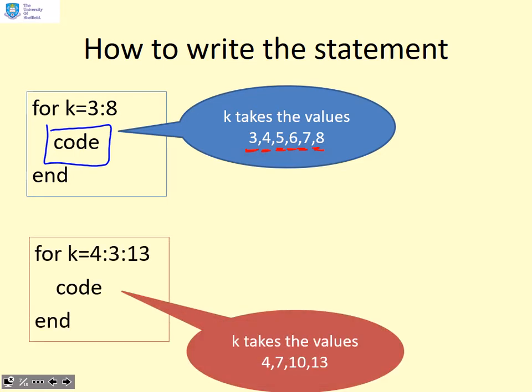Here's a different alternative. For k equals four colon three colon thirteen. You can see these values of k would be four, seven, ten and thirteen. Because that's essentially what four, three, thirteen means. It means four comma seven comma ten comma thirteen. So this loop will run four times with those given values of k.